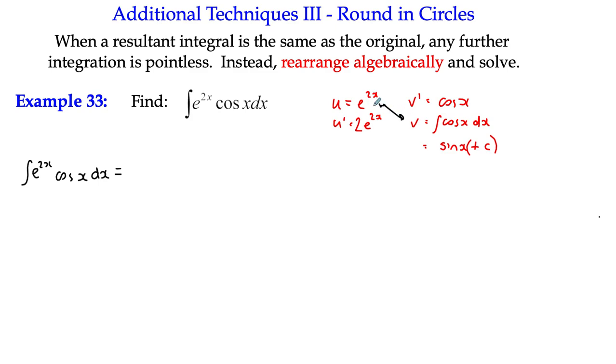Okay, so what we've got is, we've got u times v. So here we've got the pattern, top left, bottom right, e to the 2x, multiplied by sin x. Minus the integral of u dash v.